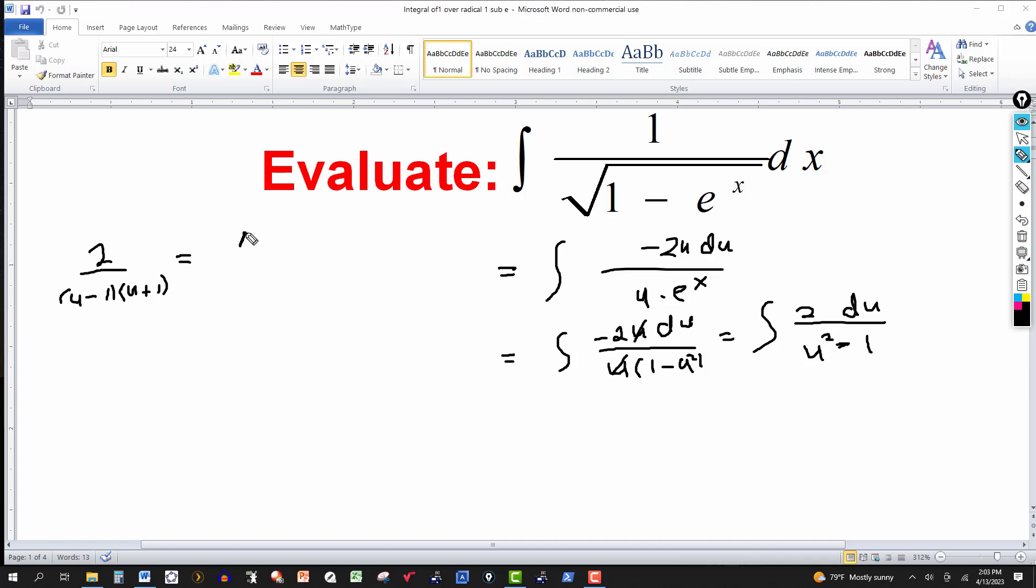So I'd have a constant. This would break down into something like a over u minus 1 plus b over u plus 1. And then we multiply both sides by the factors here, u minus 1, u plus 1. The left side has 2. And the right side becomes, the one factor u minus 1 cancels. So a is multiplied by u plus 1. b, u plus 1 cancels. So b is multiplied by u minus 1.